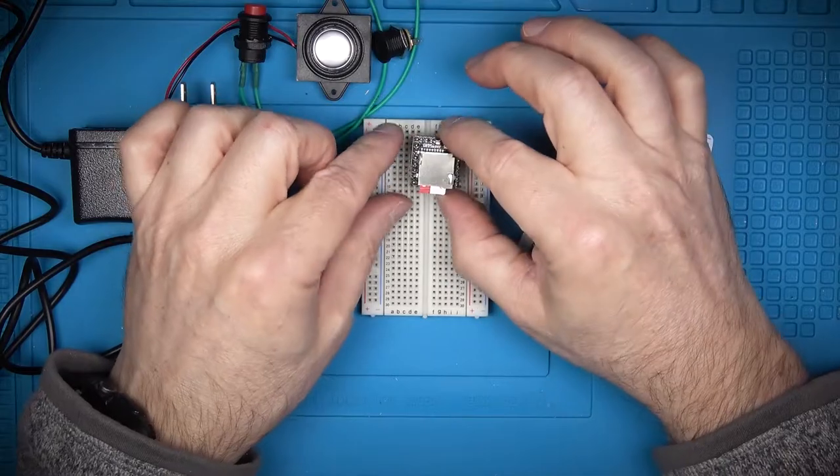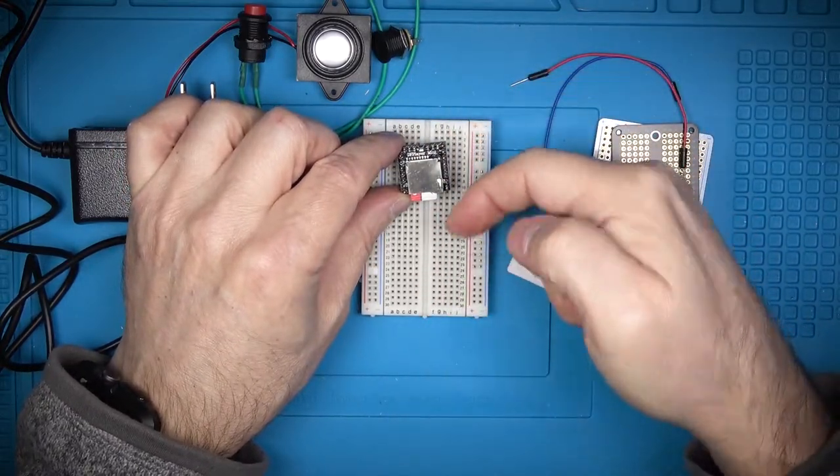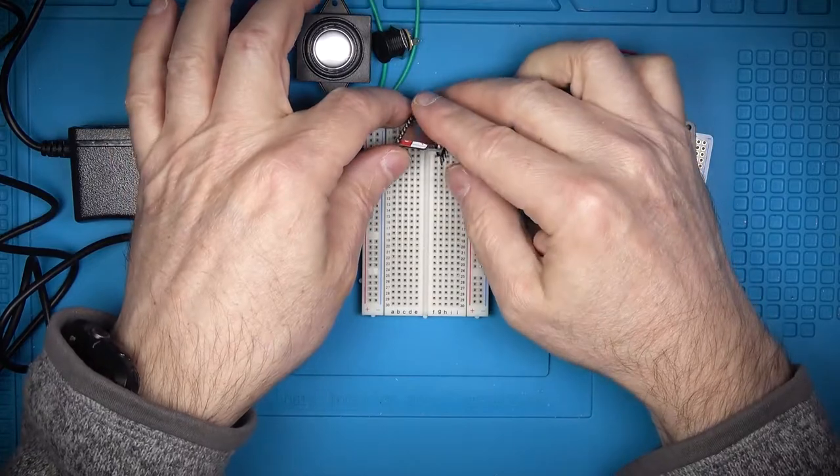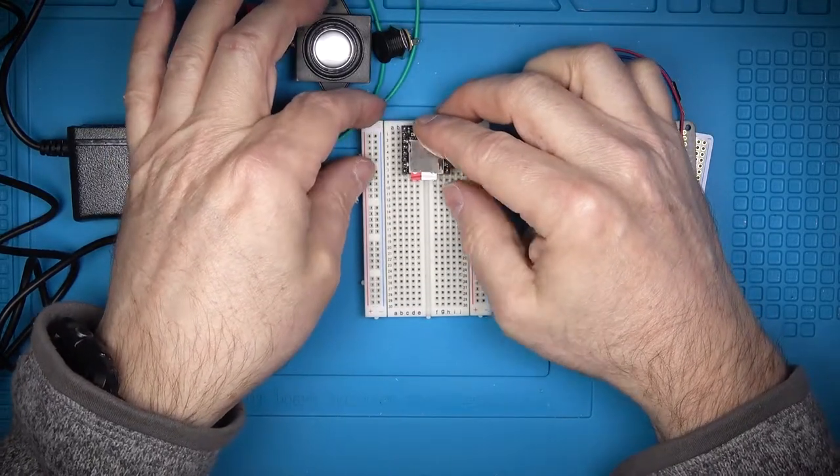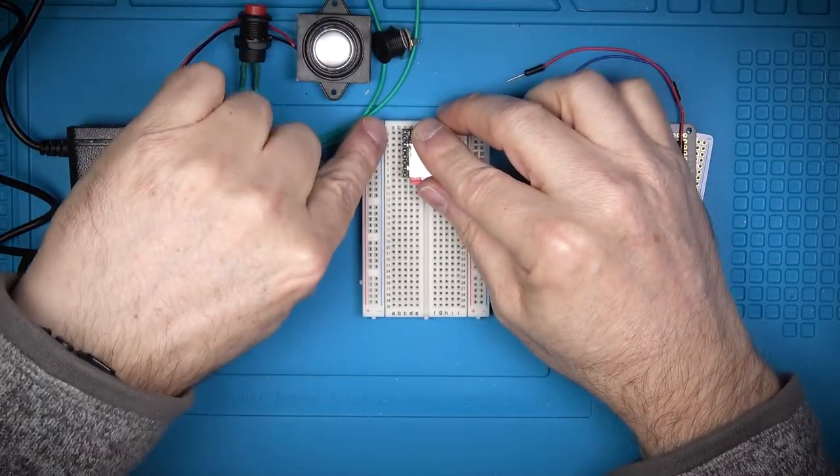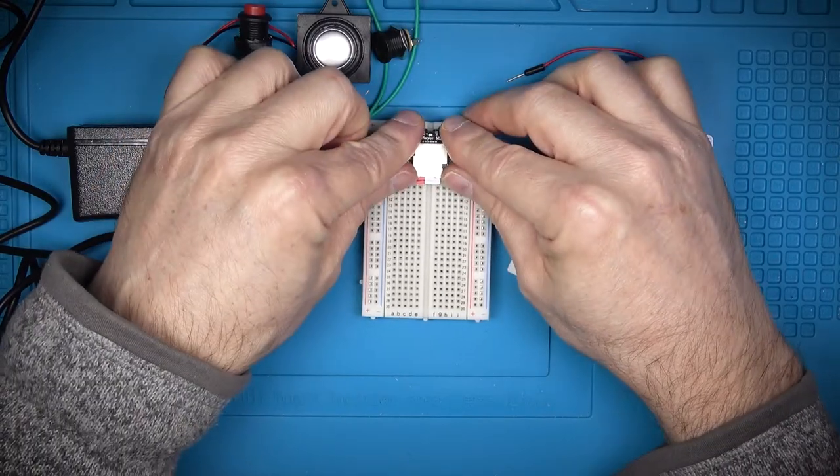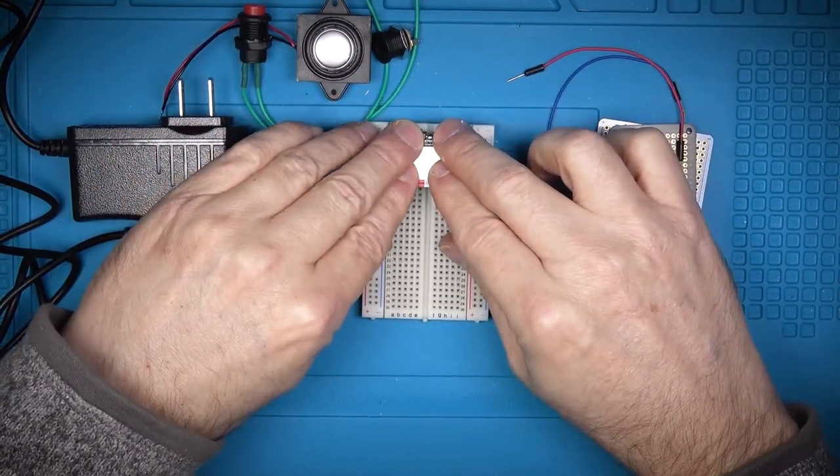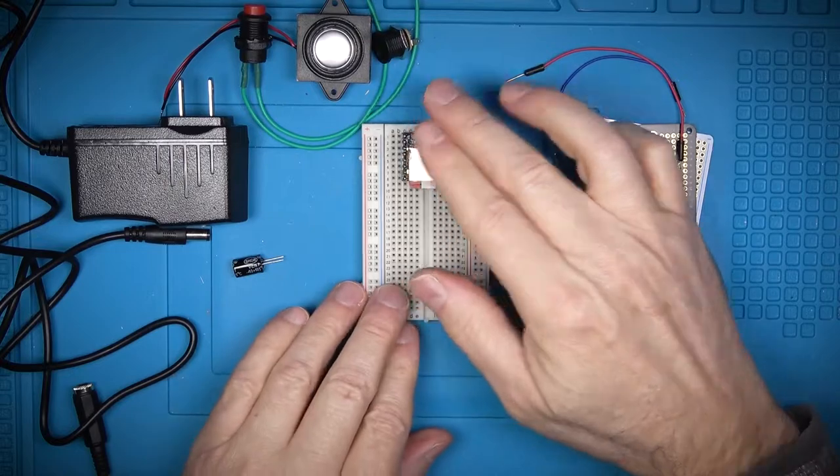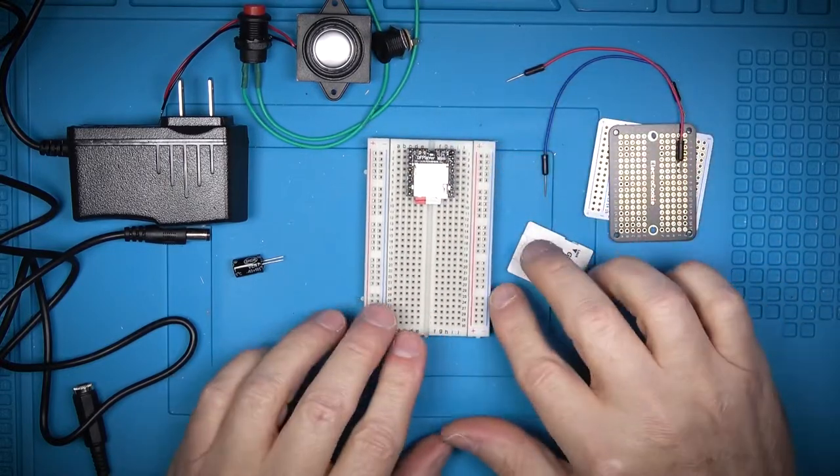Now with the card oriented so that the SD card is down and the name is facing up, I'm going to insert the player into the breadboard with the first pin sitting on the row number one just so that we're all talking the same numbers. Just press it and wiggle that in.